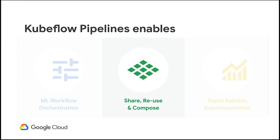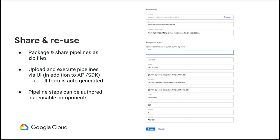If someone else has built an amazing workflow or component, we want you to be able to find it easily, quickly reuse it, and customize it for your specific needs. With Kubeflow Pipelines, once you've defined the workflow, you can package it up as a zip file, and that zip file can be shared with others — they can run it on their own Kubeflow cluster. Because each task is containerized, you're not worried about portability.